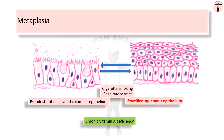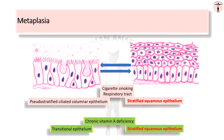In individuals with chronic vitamin A deficiency, the transitional epithelium in the urinary bladder is gradually replaced by stratified squamous epithelium.